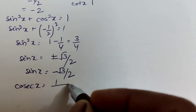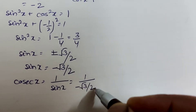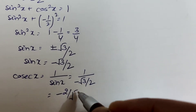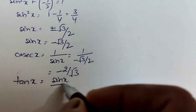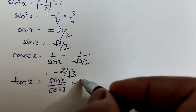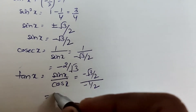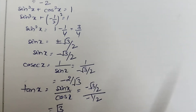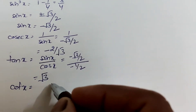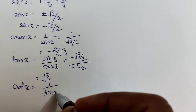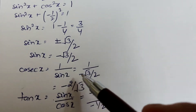Then cosec x = 1/sin x = 1/(-√3/2) = -2/√3. Next, tan x = sin x/cos x = (-√3/2)/(-1/2) = √3. And cot x = 1/tan x = 1/√3. In the third quadrant, tan x and cot x are positive, which is confirmed.